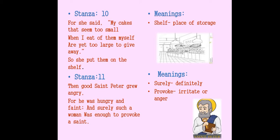Stanza 11: 'Then good St. Peter grew angry, for he was hungry and faint, and surely such a woman was enough to provoke a saint.' St. Peter became angry — he was very hungry and feeling very weak, and the selfish woman was not ready to give him even a small cake. This behavior of the greedy woman angered the saint.